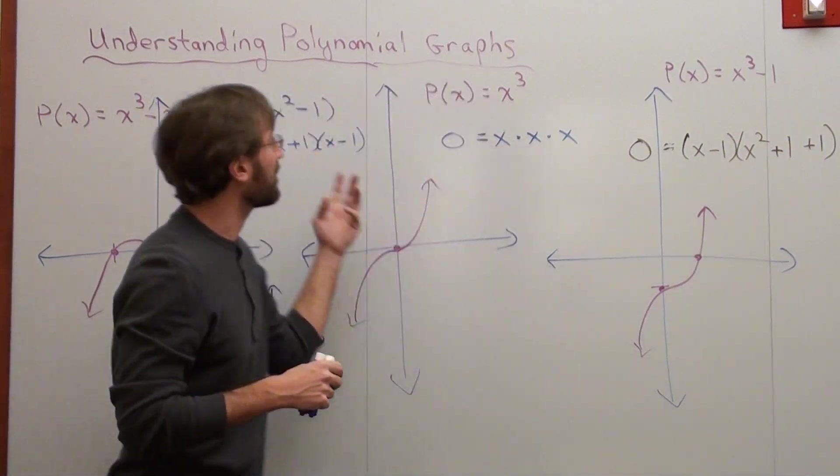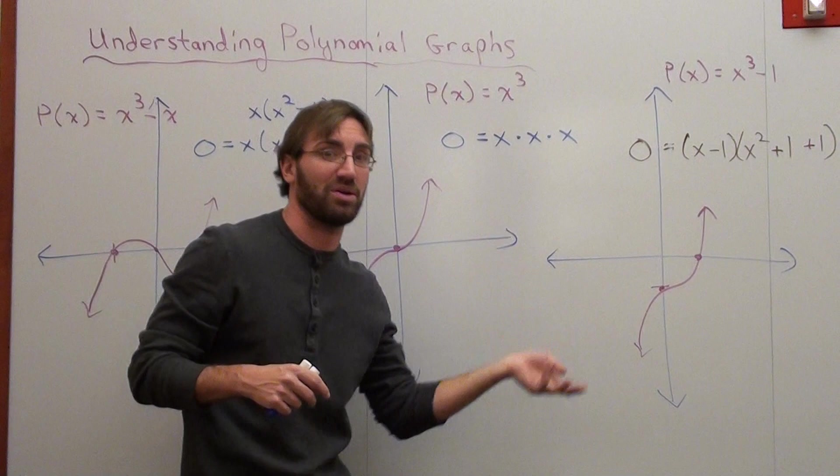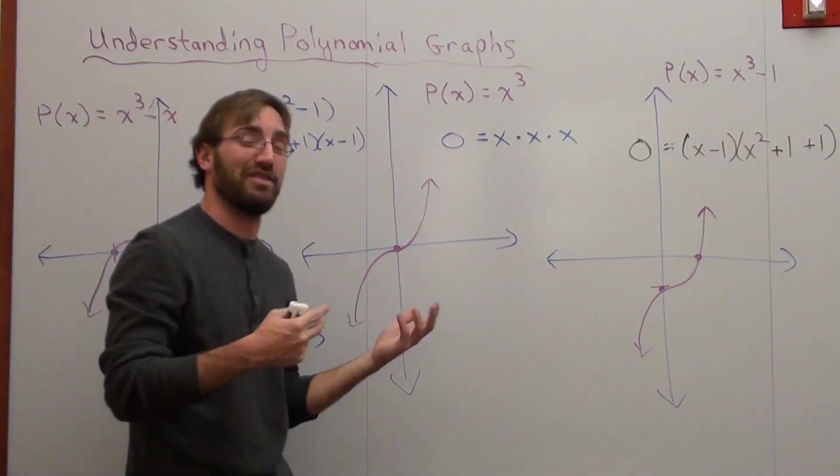But if you don't have that many, it goes down by a multiple of two. So for this one, it could be three or one. On a fifth degree, it could be five, three, or one. On a seventh degree, it could be seven, five, three, or one.